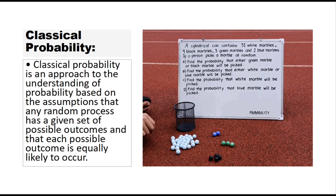Classical probability is an approach and understanding of probability based on the assumption that any random process has a given set of possible outcomes and that each possible outcome is equally likely to occur.